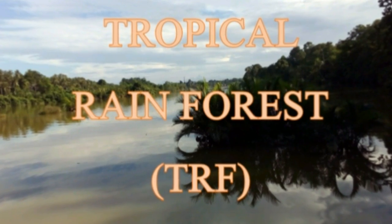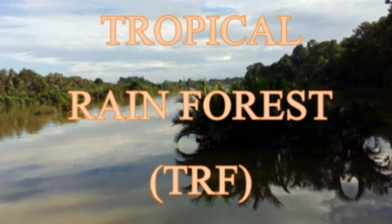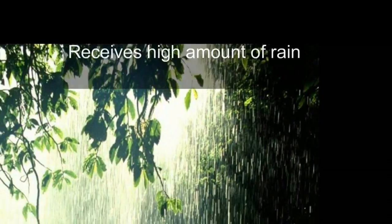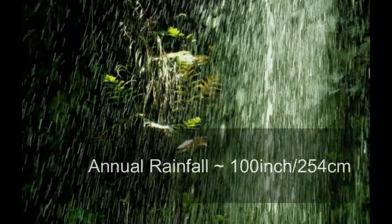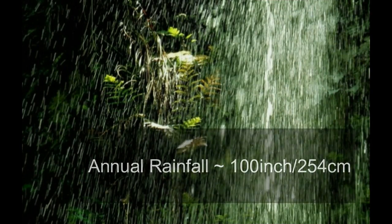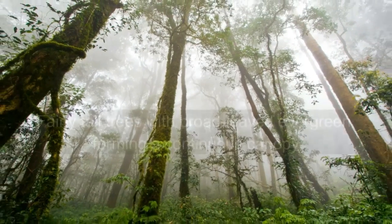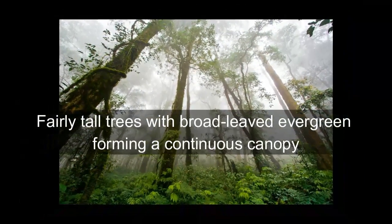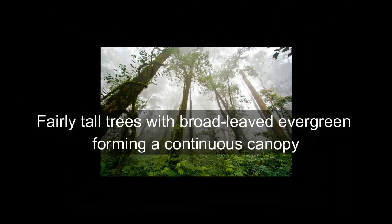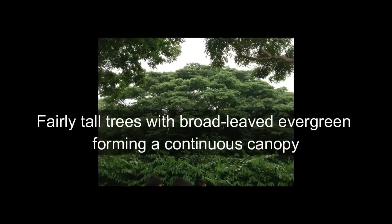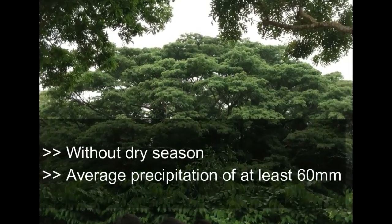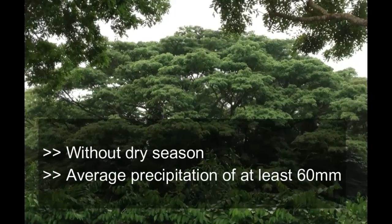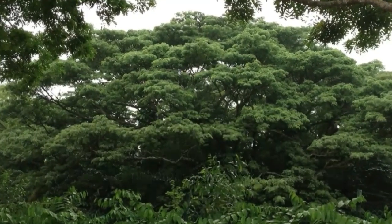What is Tropical Rainforest? Tropical Rainforest is a tropical forest that receives a high amount of rain, with an annual rainfall of about 100 inches or 254 cm. The tropical rainforest has fairly tall trees with broadleaf evergreen forming a continuous canopy. It is without dry season and has an average precipitation of at least 60 mm.